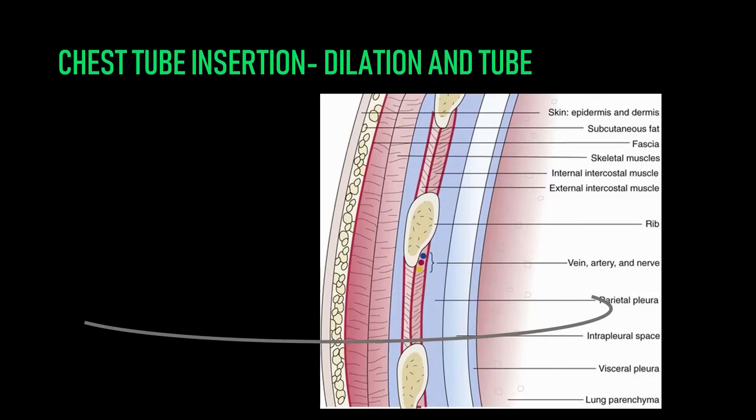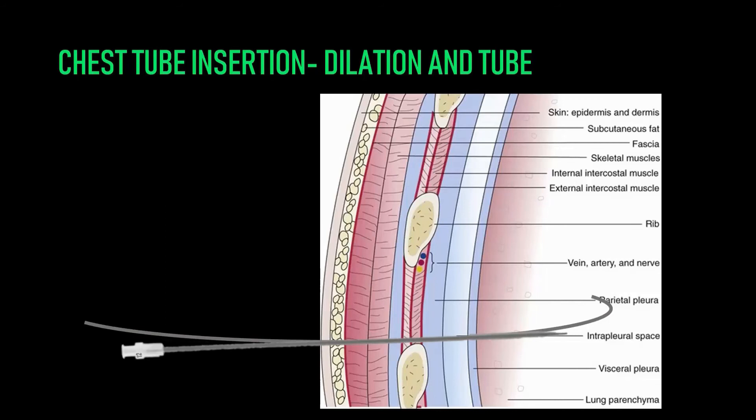Next is dilation. Take the dilator and run it over the wire until you hit the skin surface. As you begin to insert the dilator into the skin, advance with an assertive twisting motion. You don't need to insert the dilator all the way — just deep enough to get through the pleural space. If you're using a Thalquik kit with multiple dilators, do this fairly quickly in sequence.